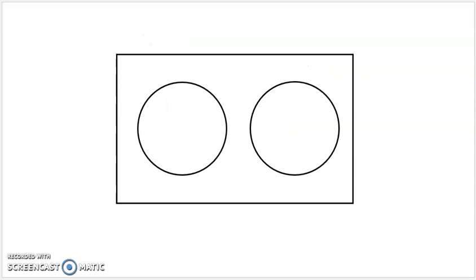You can also have examples of sets that don't overlap — they're called disjoint sets. When sets are disjoint, it means there's no intersection and nothing they have in common. So if the universal set is animals again, maybe this set is the set of dogs and this set is the set of cats, and there's no animal that's both a dog and a cat. That's why the circles would be disjoint — they'd be separate.